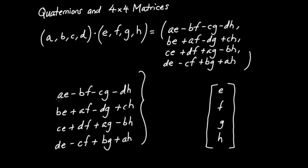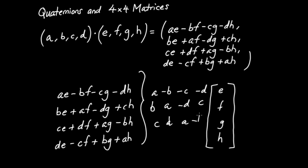To form that four-by-four matrix, what I do is I just read off the coefficients for the E, F, G, and H. So in the first row, I'm going to have A, minus B, minus C, minus D. In the second row, I have B, A, minus D, C. In the third row, I have C, D, A, minus B. And then finally, I have D, minus C, B, A. And there you go — that's a quaternion written as a four-by-four matrix.